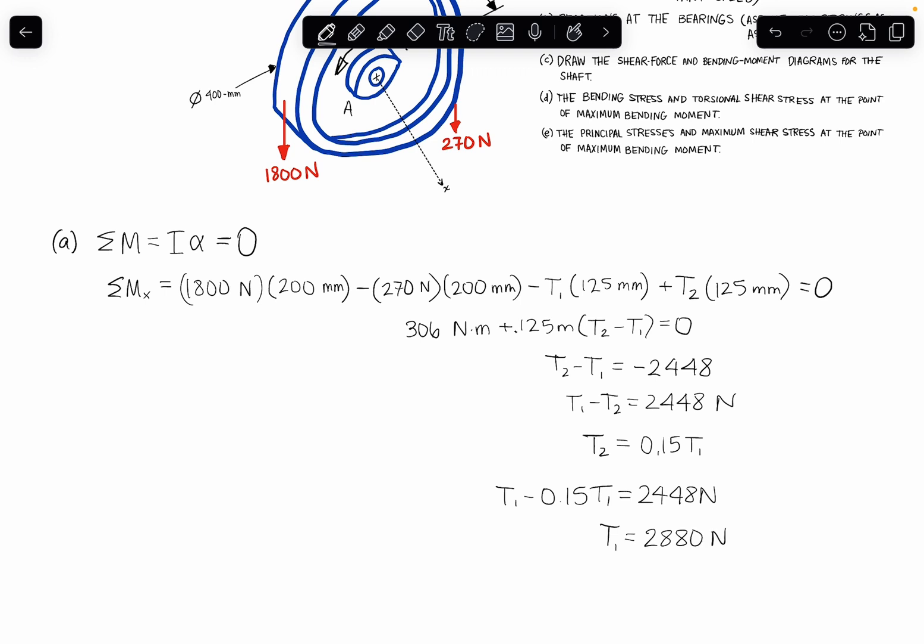And then plugging that in to the equation for T2, so 2,880 times 0.15 gives me 432 newtons. Okay, so here is our answer for part A.